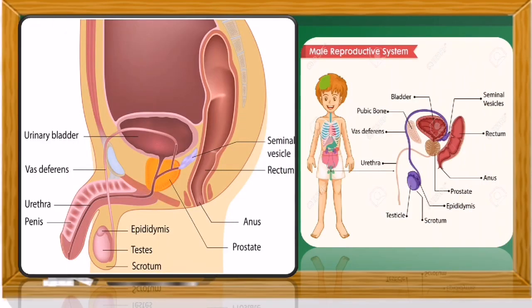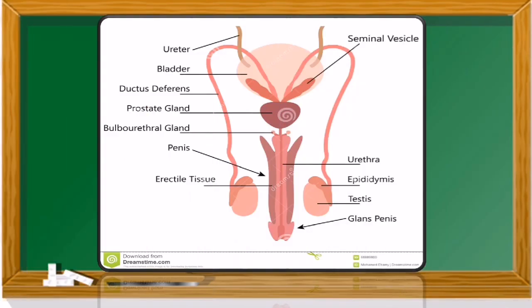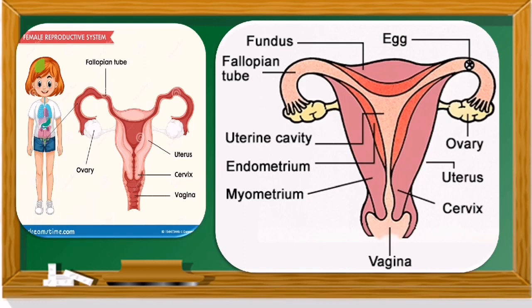Please refer to the labeled male reproductive system diagram for your learning tasks given in our module. You may pause the video to study the labeled parts carefully and copy them. Also refer to the labeled parts of the female reproductive system for your learning tasks.